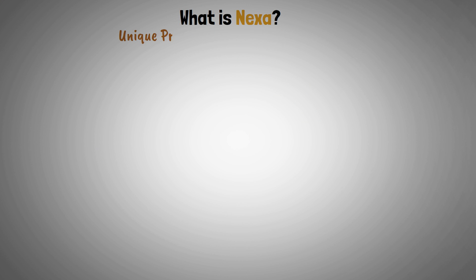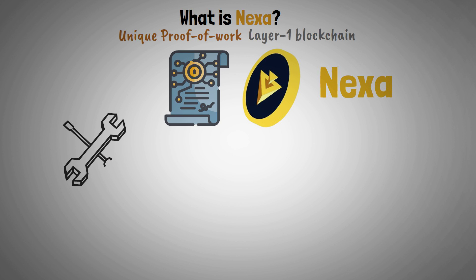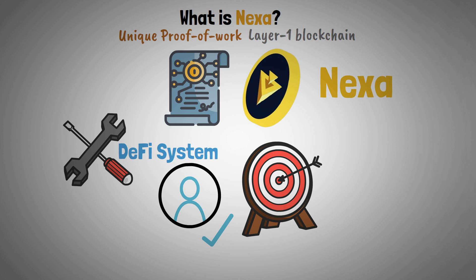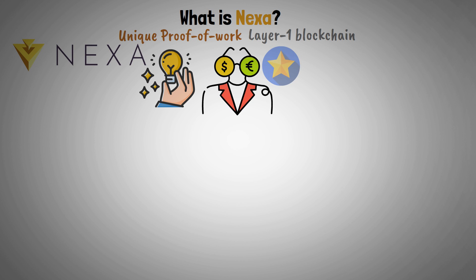A unique proof-of-work layer-one blockchain featuring smart contracts and a native token is called Nexa. Creating a decentralized financial system that guarantees access for everyone is the main mission of this project. Nexa blockchain is a game changer in a world where financial inclusivity is essential. Its goal is to provide the digital underpinnings for a permissionless financial system.